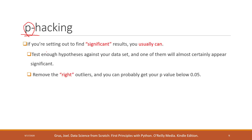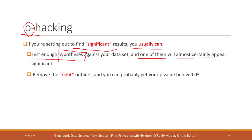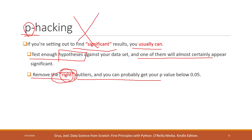P-hacking means that if you really want to find a significant result, you can massage your data. You can test enough hypotheses — just adjust your hypothesis and try multiple times, and eventually one of them will be significant. Or if you remove the right outliers, you can probably get a p-value below 0.05. P-hacking is definitely not recommended. It violates the integrity of your research.